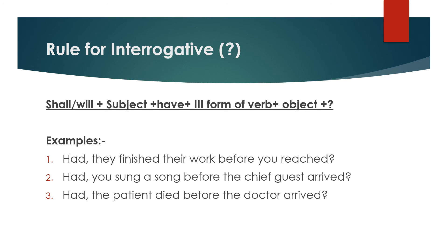The rule for interrogative sentences is: shall/will plus subject plus have plus third form of verb plus object, followed by a question mark. An example of an interrogative sentence: Had they finished their work before you reached?